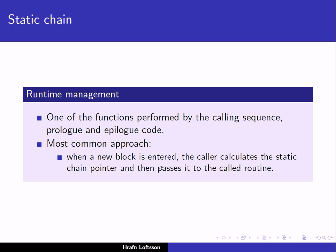The most common approach is that when a new block is entered, the caller calculates the static chain pointer for the callee and passes it to the called routine. The caller is responsible for calculating the static chain pointer, and then the callee sets the static chain pointer in its activation record.